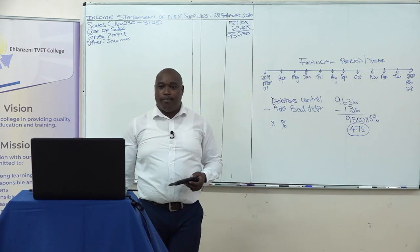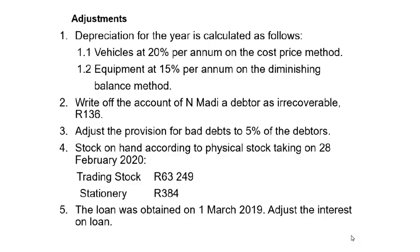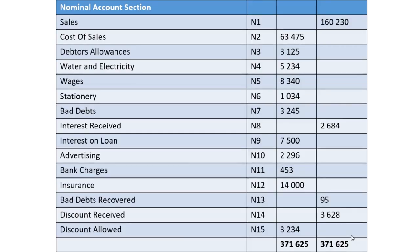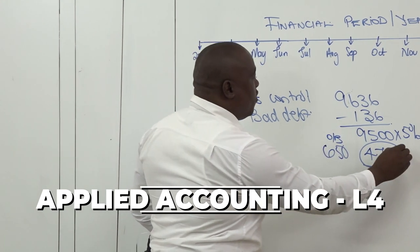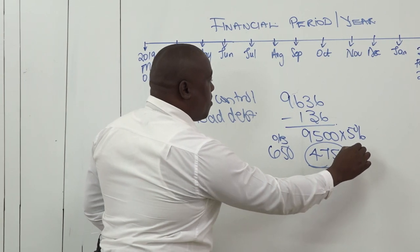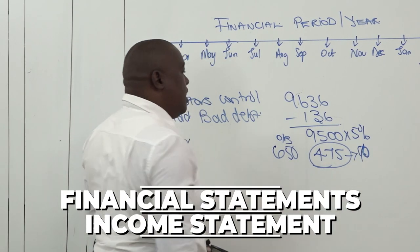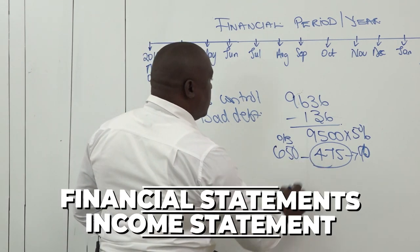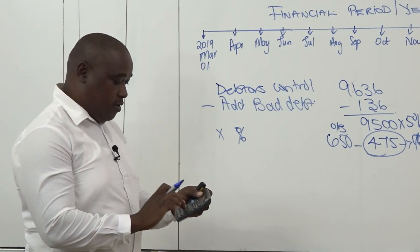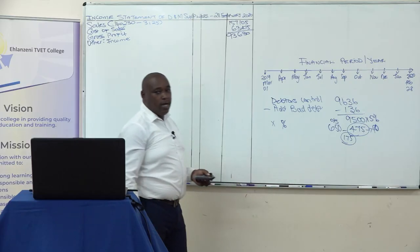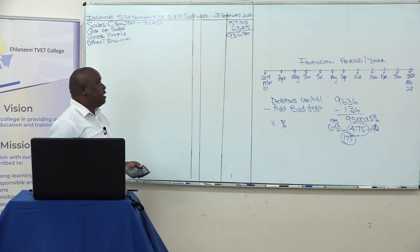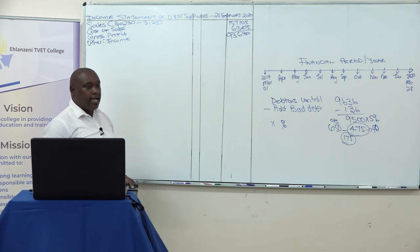This 475 is our closing balance for the provision for bad debt. To determine whether it's an income or expense, we check the provision for bad debt from the pre-adjustment trial balance, which shows 650 — that's our opening balance. So: 650 (opening) minus 475 (closing) gives us 175. Since this is a decrease in the provision for bad debt, this 175 is regarded as income to the business.